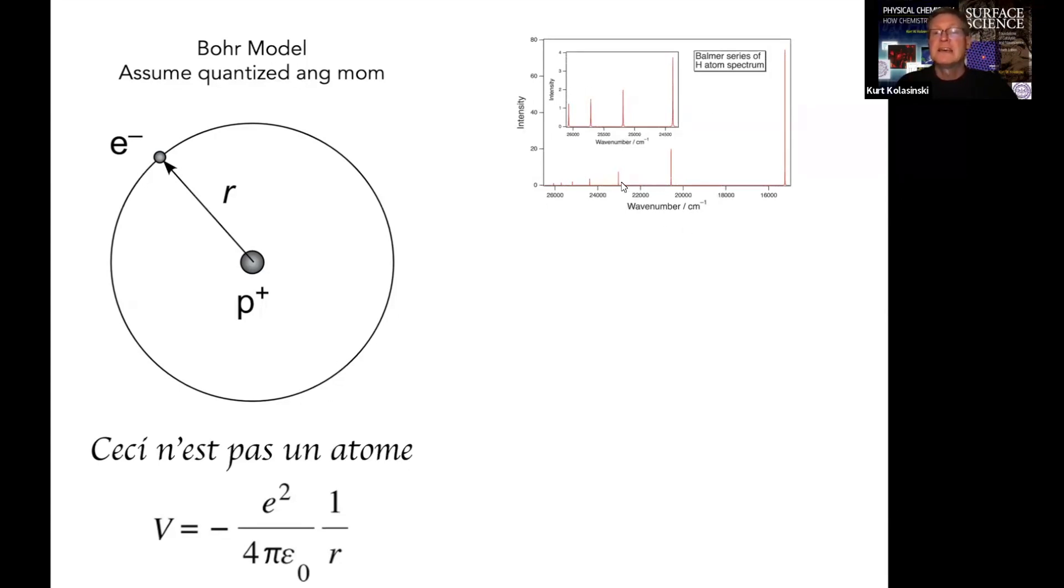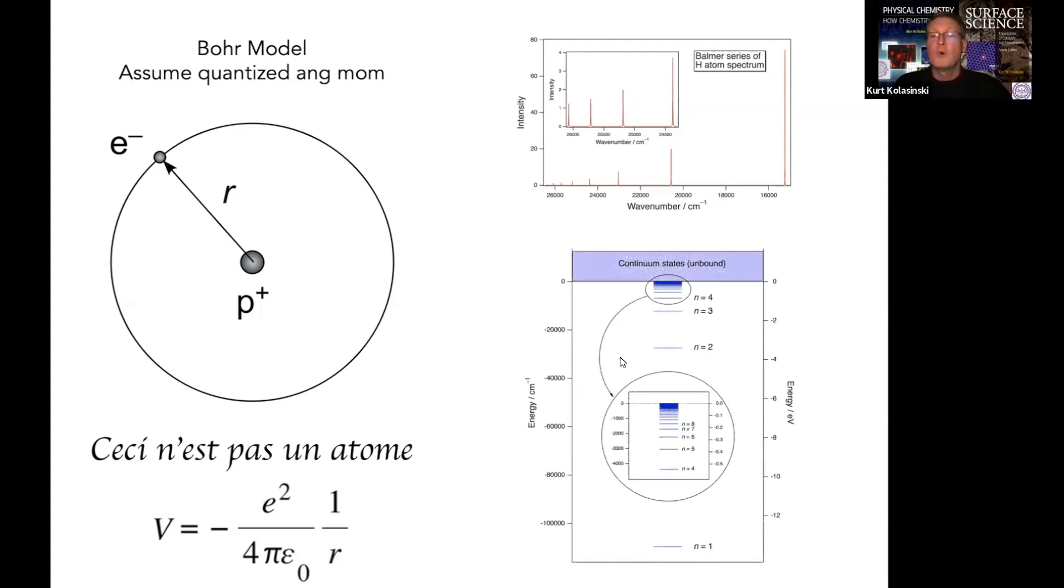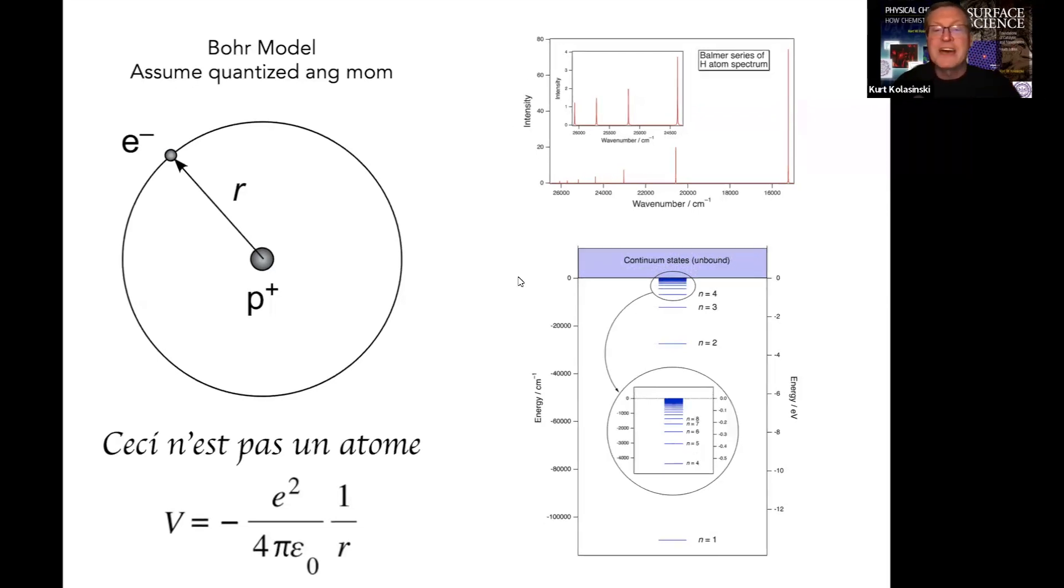This naturally explains the spectroscopy of the hydrogen atom, why we have these nice sharp lines instead of some continuous spectrum. Quantization of angular momentum leads to quantization of the energy of allowed levels in the hydrogen atom. Then we get transitions between these levels with discrete energies leading to these sharp lines.